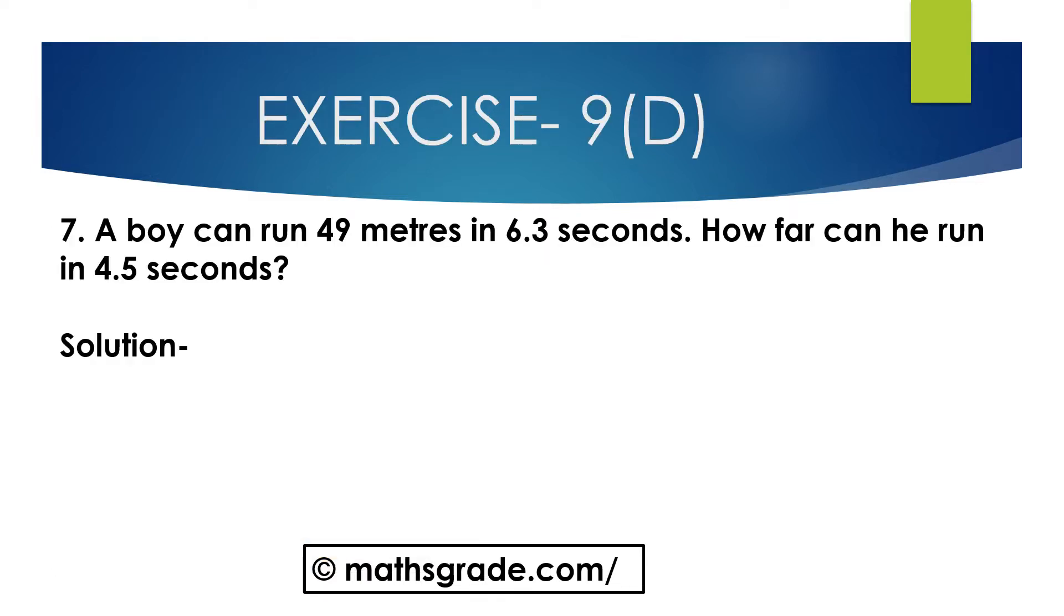Question 7: A boy can run 49 meters in 6.3 seconds. How far can he run in 4.5 seconds? In 6.3 seconds, a boy can run 49 meters.